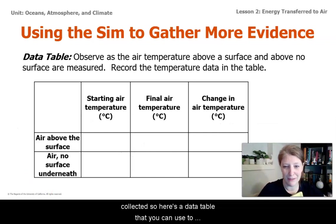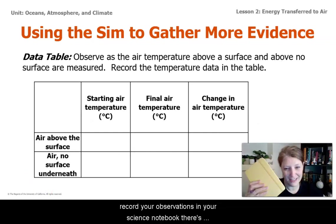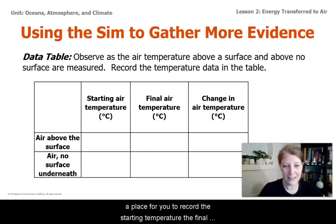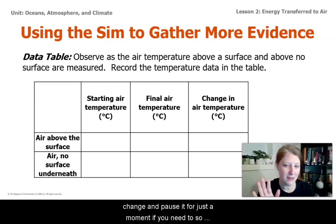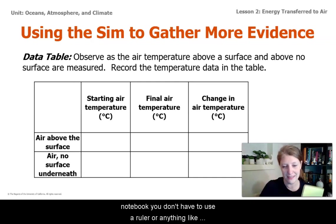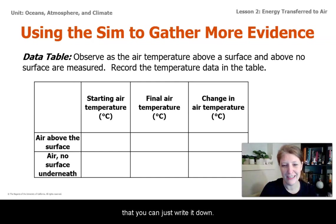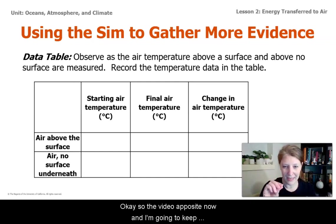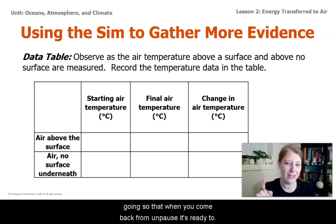Here's a data table that you can use to record your observations in your science notebook. There's a place to record the starting temperature, the final air temperature, and then you can subtract those to find the change. Pause for just a moment if you need to so that you can create this data table in your science notebook. You don't have to use a ruler or anything like that — you can just write it down. Pause the video now, and I'm going to keep going so that when you come back, it's ready to go.